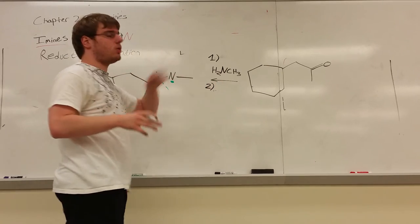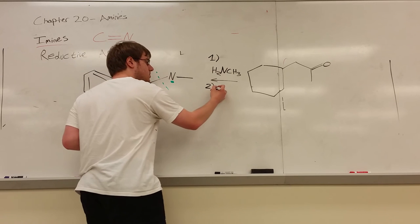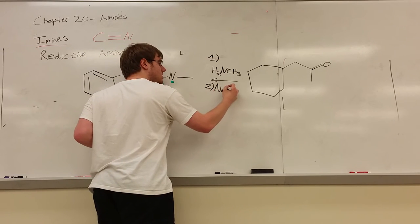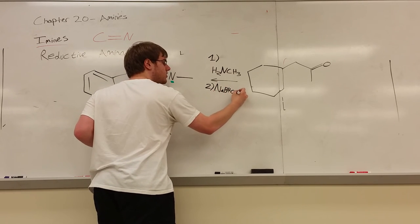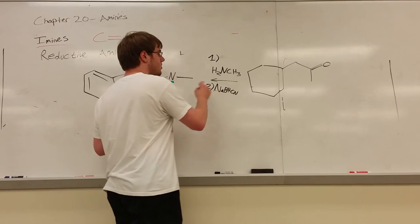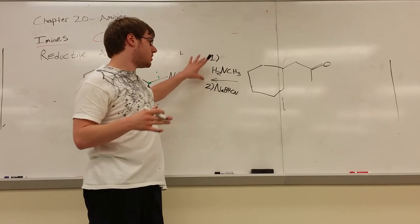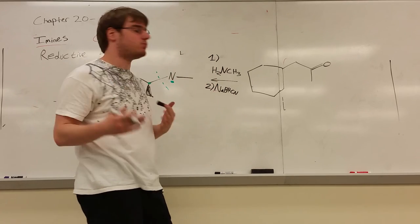And step two, this alone would only give us a C double bond N, we want C single bond N, so step two will be NABH3CN. Now you're allowed to do these two steps, the steps drawn out separately, with separate intermediates, but you're also allowed to do them together, like this, step one, step two. And sometimes you'll see them on exams, written together like this, so I want you to get accustomed to it.